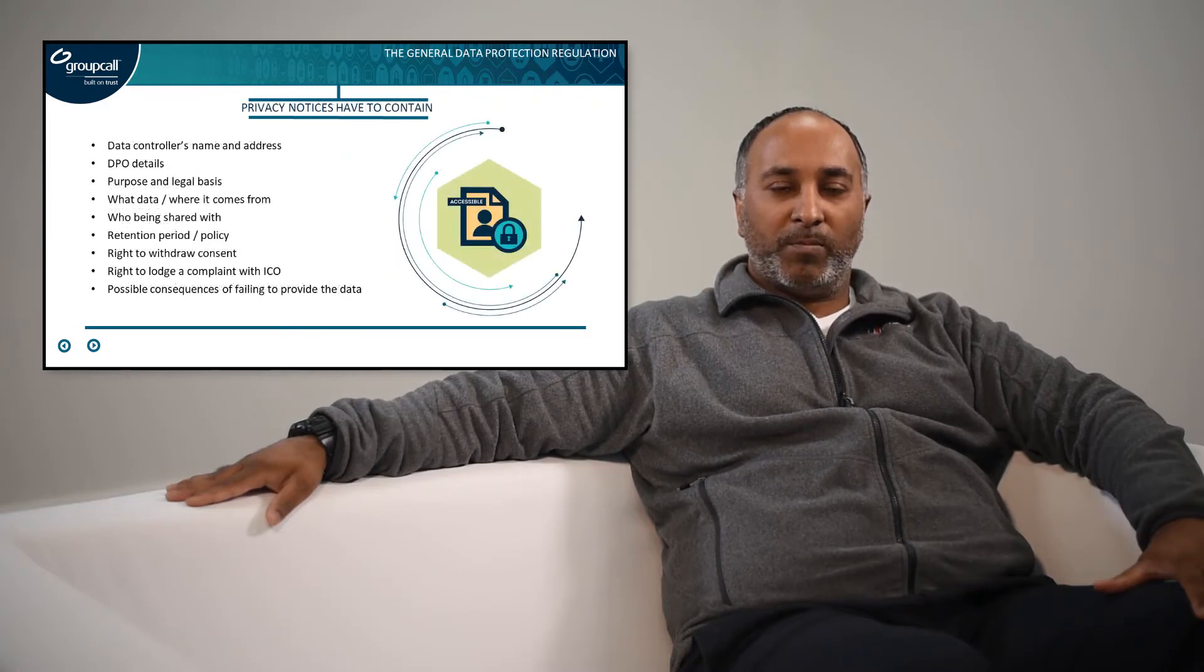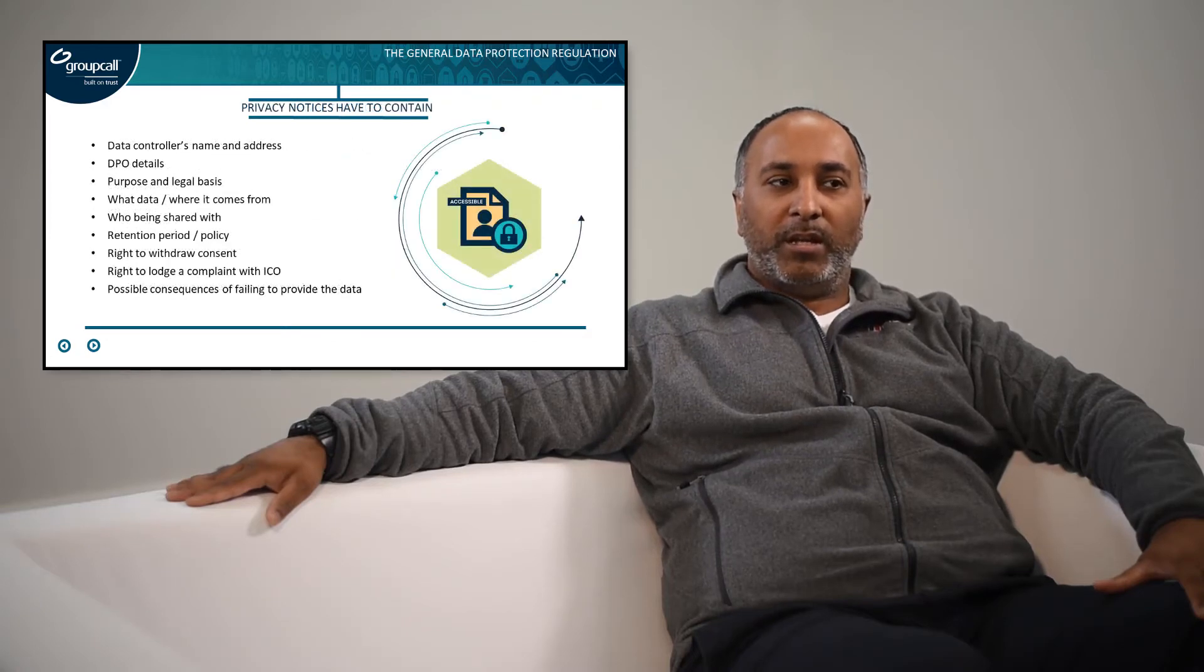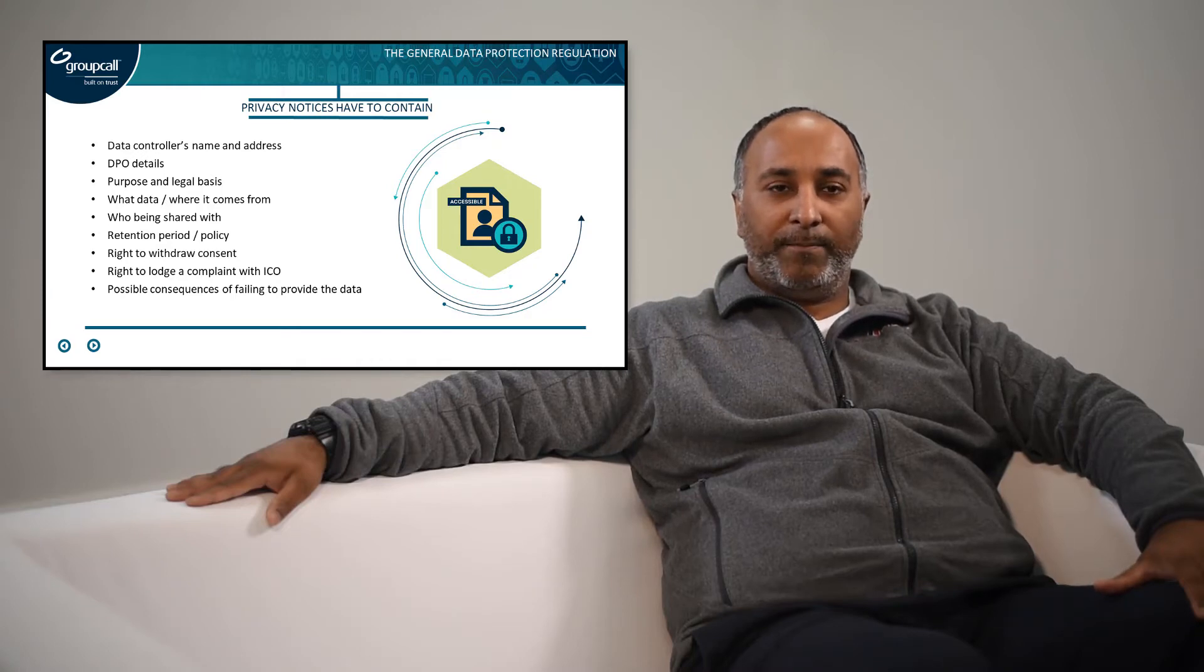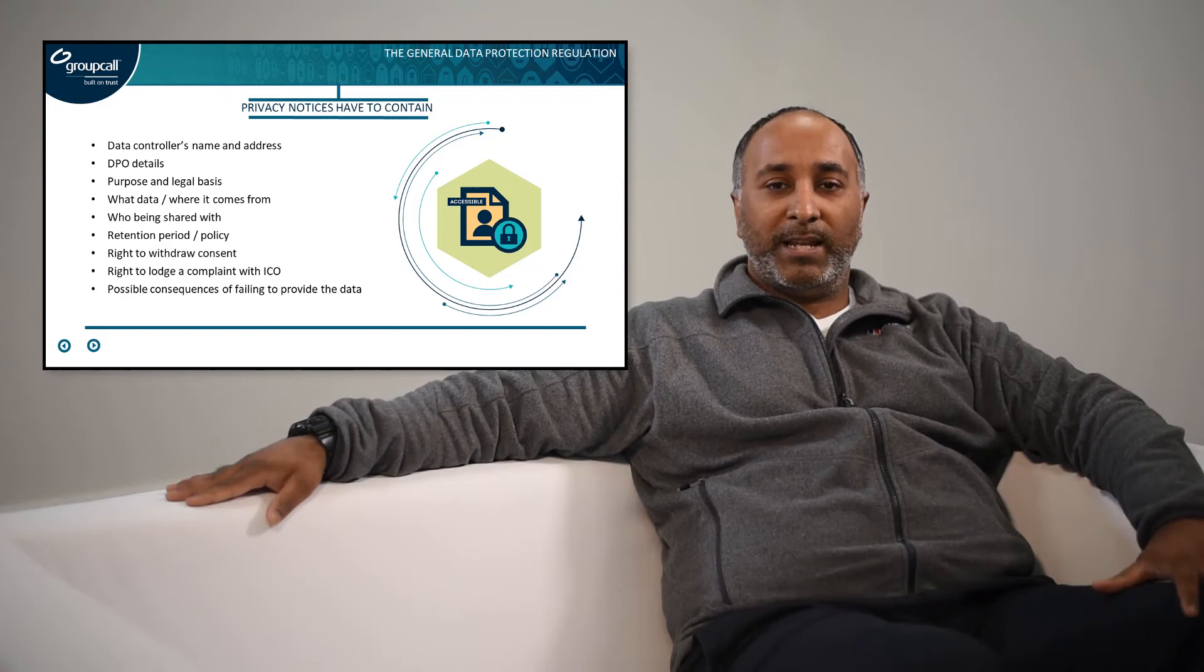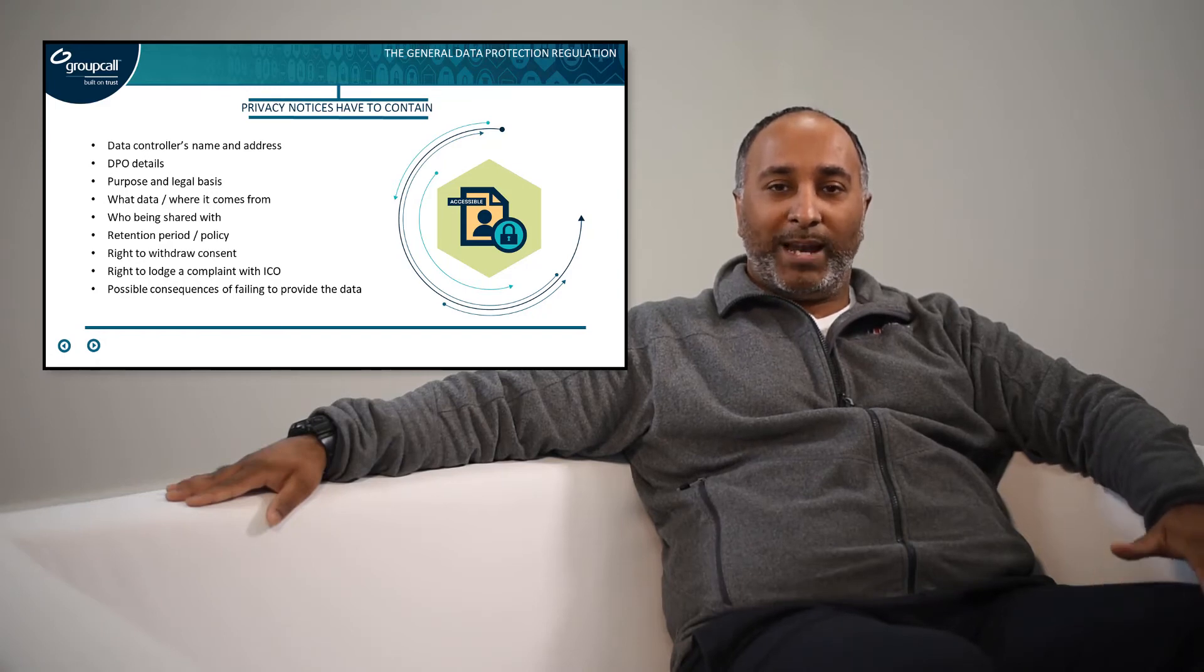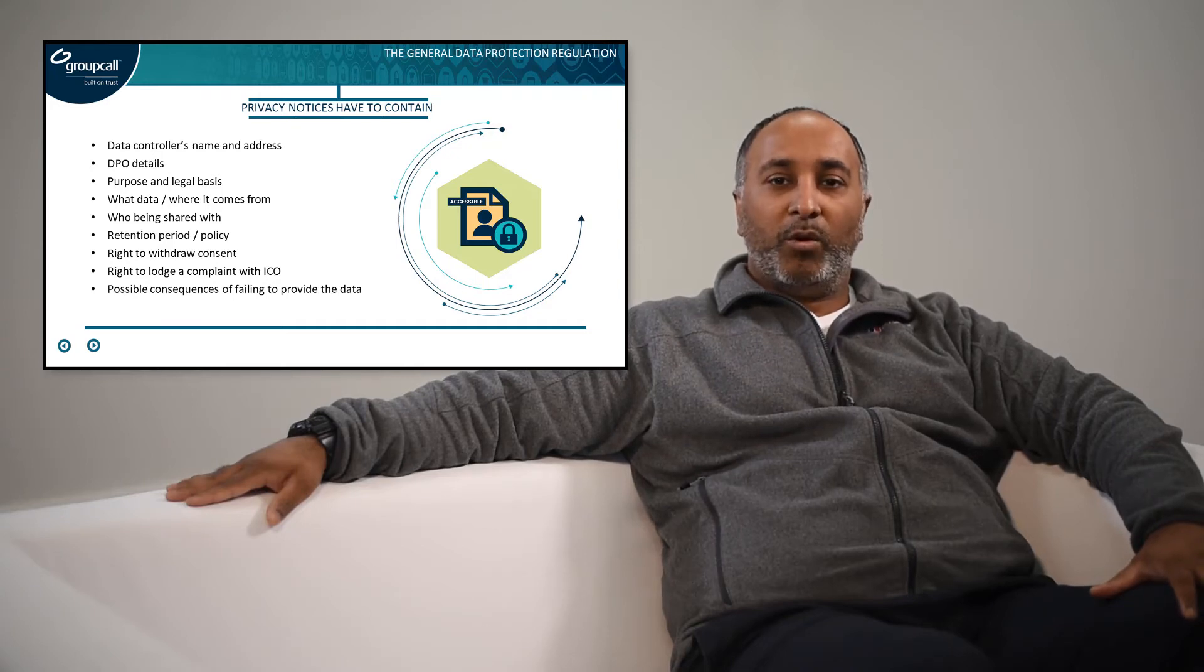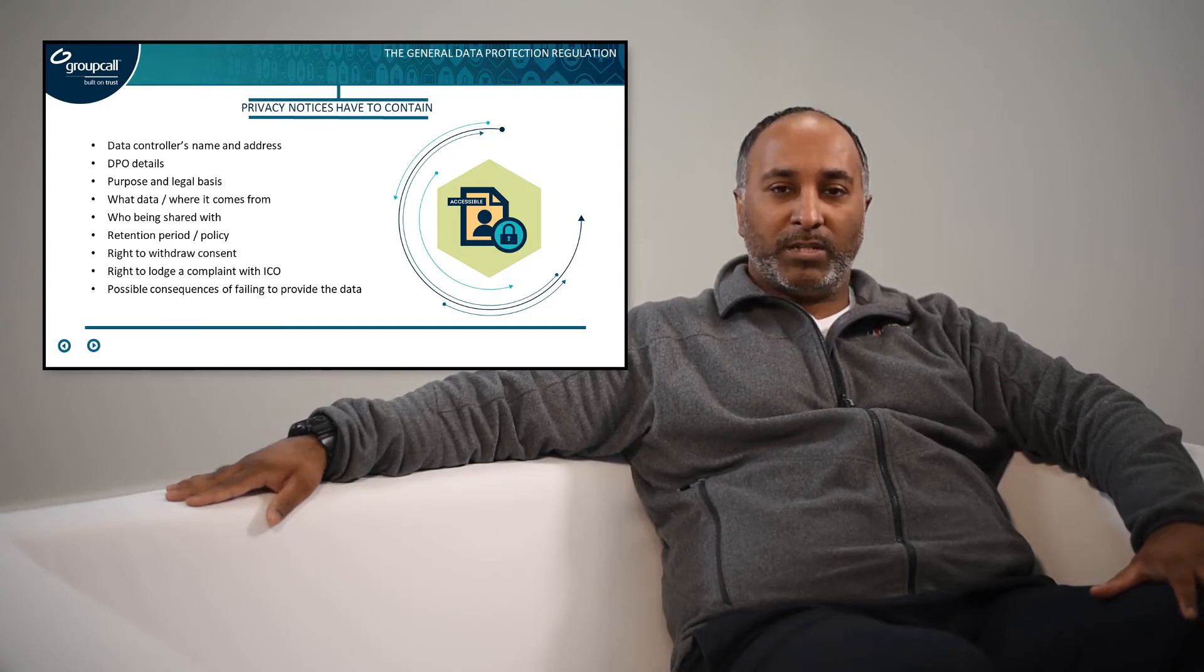What kind of information should be on your privacy notice? The information that should be on your privacy notice is who's the data controller, who is going to be your DPO, so you should put on their email address and the actual name of the DPO, what's the purpose and legal basis of why you're collecting that data, which majority of it will be public interest, who is the data going to be shared with, and you're going to have to name all your data processors as well.